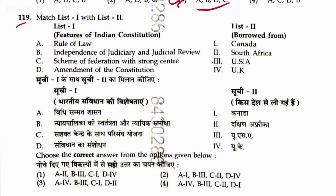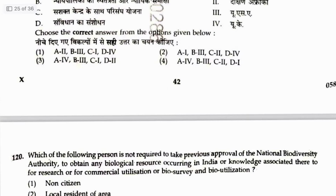Question 119: Features of Indian constitution borrowed from various countries — Rule of law from UK. Independent judicial review from USA. Scheme of federation with strong center from Canada. Amendment of constitution from South Africa. Sequence is 4, 3, 1, 2. Answer is 3.